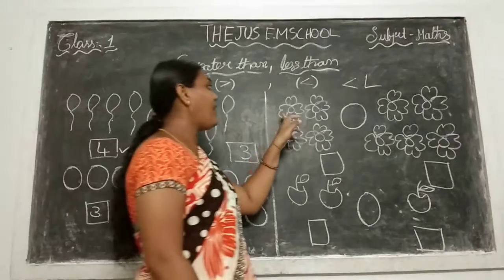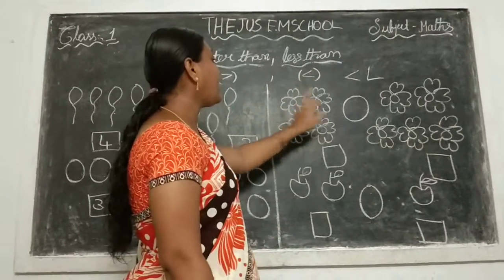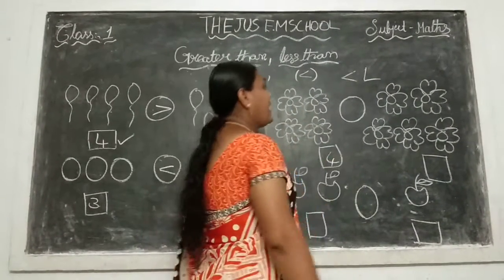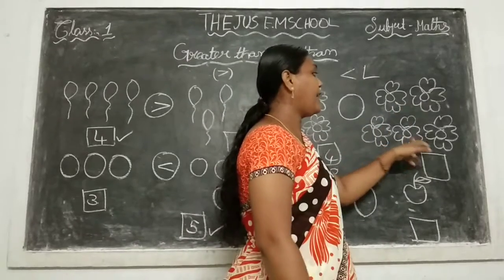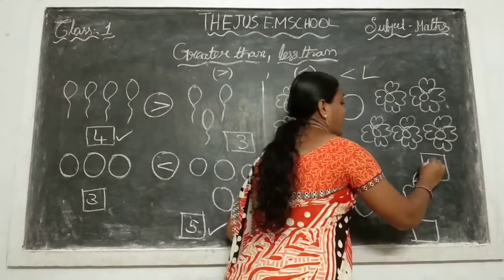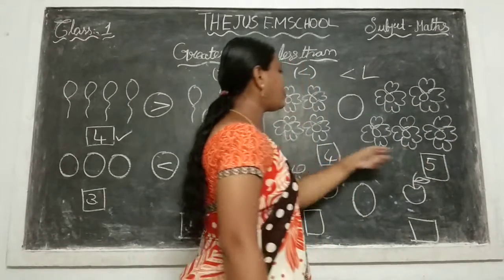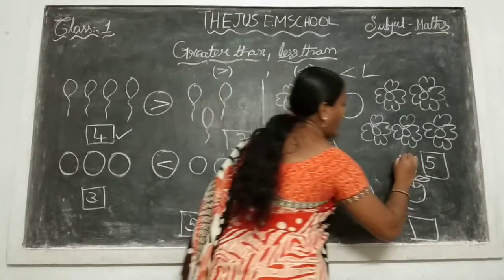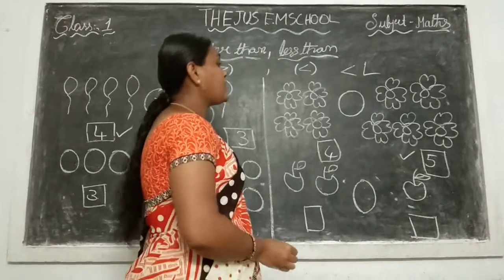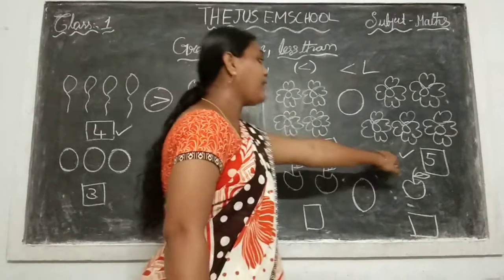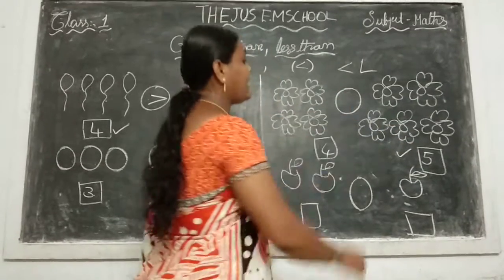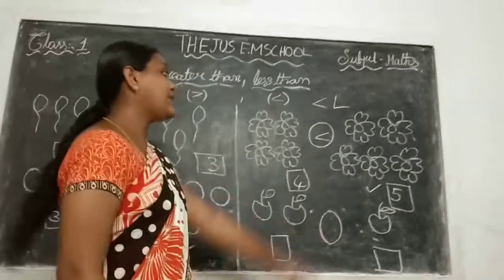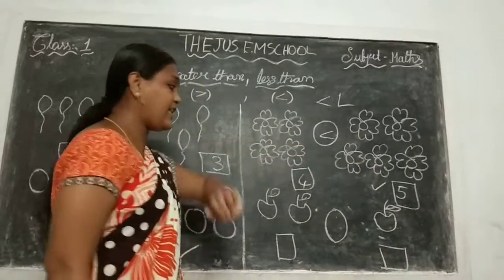And see here — flowers. How many flowers are here? 1, 2, 3 and 4. And here: 1, 2, 3, 4 and 5. Now compare these 2 numbers, 4 and 5. Which is the big number? 5 is the big number. The open mouth is to the big number side — that is called less than.